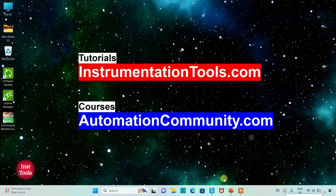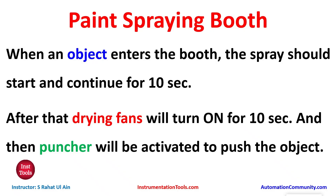Hello friends, welcome to Automation Community. Today in this video we are going to discuss an example about paint spraying booths. When an object enters the booth, the spray should start and continue for 10 seconds. After that, drying fans will turn on for 10 seconds, and then the pusher will be activated to push the object. When an object enters the booth, the sensor will detect the presence of that object, which will start the process of spraying the paint for 10 seconds.